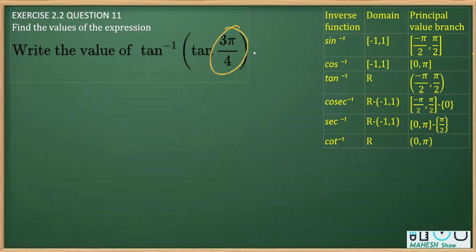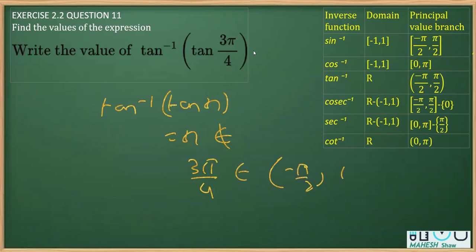Clearly, 3π by 4 does not lie between minus π by 2 to π by 2. So we cannot write this as tan inverse tan x equals x, as the x here does not belong to minus π by 2 to π by 2. So we cannot solve like this.